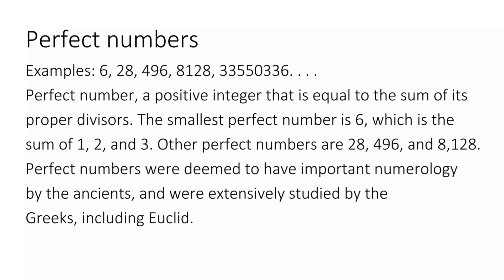Perfect number: a positive integer that is equal to the sum of its proper divisors. The smallest perfect number is 6, which is the sum of 1, 2, and 3. Other perfect numbers are 28, 496, and 8,128. Perfect numbers were deemed to have important numerology by the ancients and were extensively studied by the Greeks, including Euclid.